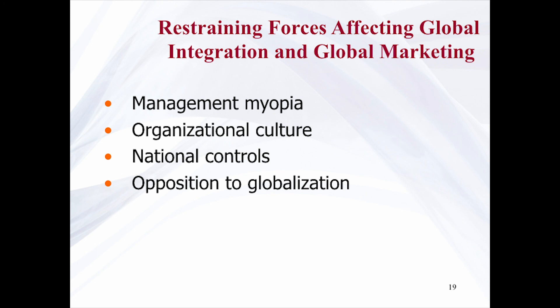National controls are another restraining force. Every country tries to protect its home industries and services through tariffs and non-tariff controls. Thanks to organizations like GATT, WTO, NAFTA, the European Union, and other economic agreements, tariffs have been largely removed in high-income countries. Non-tariff barriers to trade include buy-local campaigns, food safety rules, and other bureaucratic obstacles.